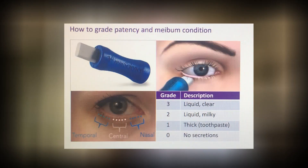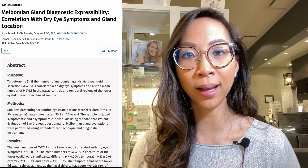I grade the results as such: zero denotes absolutely no secretion on pressure; one denotes expressibility however the meibum is of thick and toothpaste-like consistency; two denotes expressibility with liquid secretions however it looks milky or cloudy; and finally, a grade of three denotes good expressibility with liquid and clear secretions. Going back to the hallmark study from Korb and Blackie in 2008, they found that patients became symptomatic when only six glands total were functioning normally — meaning these glands were secreting liquid and clear quality meibum. This finding has been replicated clinically by numerous optometrists, and I found a very close correlation myself. This is an excellent way to verify the presence of MGD in diagnosis as well as determining the success of treatment.